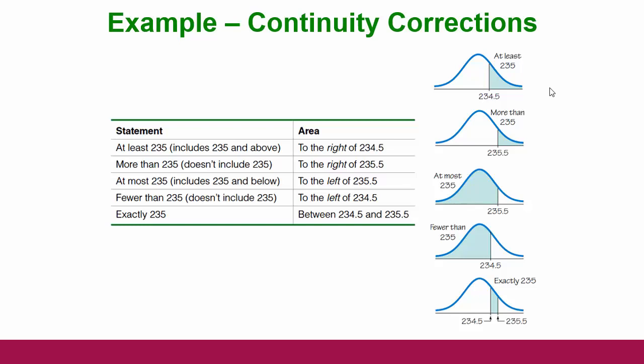You can see why we have to do this correction because at least 235 means 235, 236, 237, and so on, but more than 235 actually starts at 236 — you lose 235. So the normal approximation for at least, which includes 235, and more than, which doesn't include 235, have to be different. That's why we back up half a point to 234.5 when doing at least, and go forward half a point to 235.5 when doing more than. This little strip is what 235 equals — this one includes that strip, this one does not.